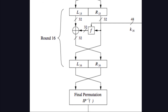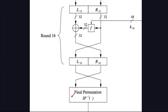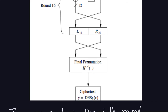Finally, at the very last part, the right-hand side and left-hand side are swapped, giving a 64-bit block again after all 16 rounds. Then the final permutation is applied — which is the inverse of the initial permutation, computable with a table — and the ciphertext comes out. That's the whole process.